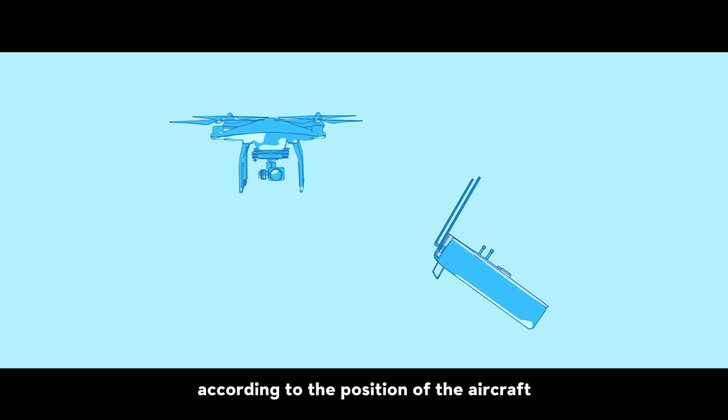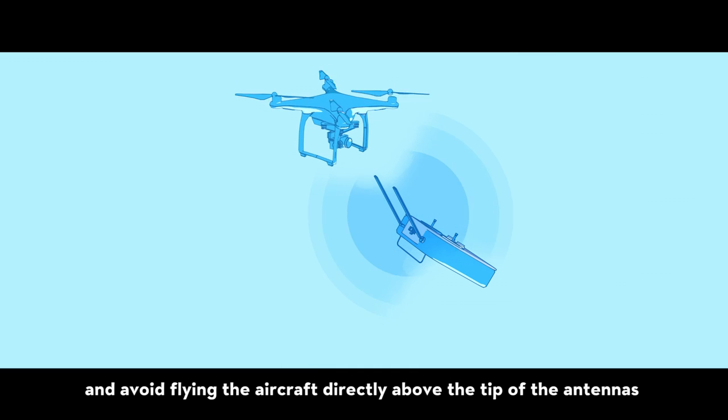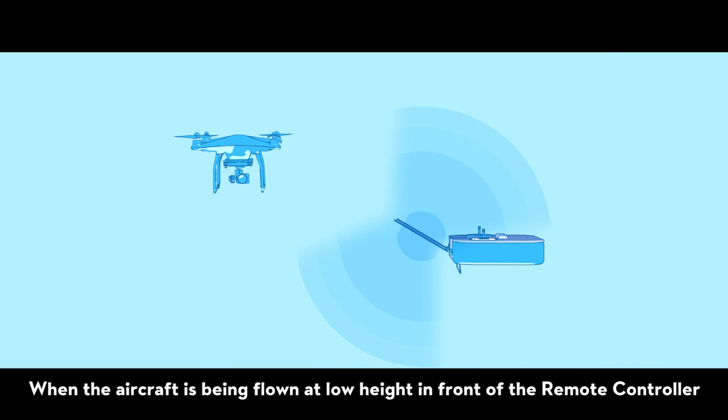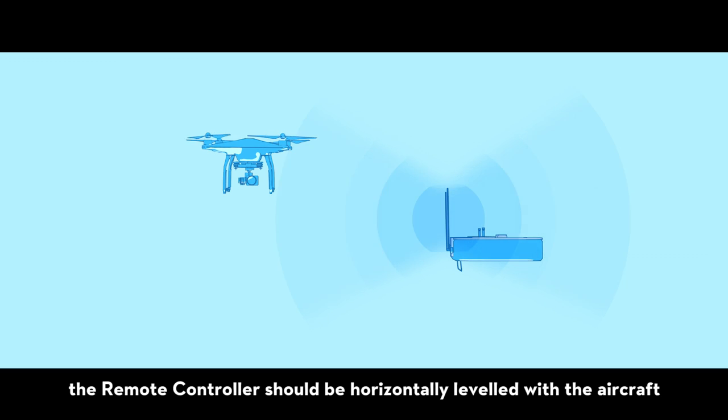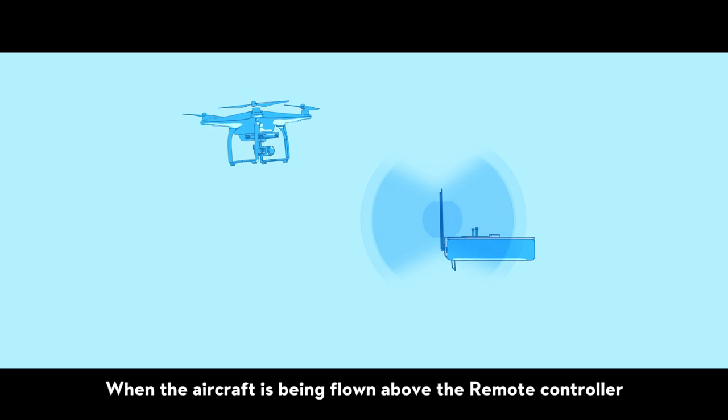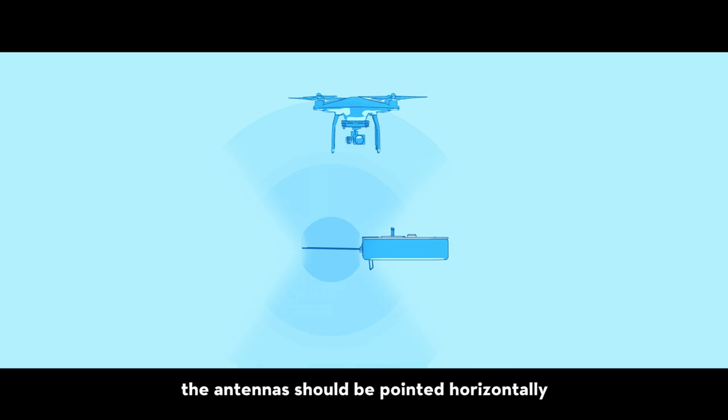Avoid flying the aircraft directly above the tip of the antennas to maintain strong wireless connection. When the aircraft is being flown at low height in front of the remote controller, the remote controller should be horizontally leveled with the aircraft and the antenna should point upwards to ensure a strong signal. When the aircraft is being flown above the remote controller, the antenna should be pointed horizontally so that its strongest signal is in a direction directly upwards.